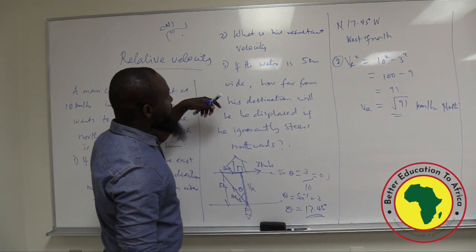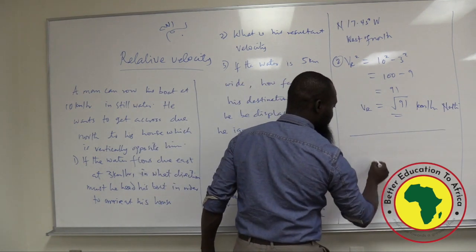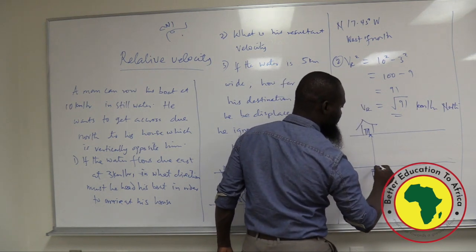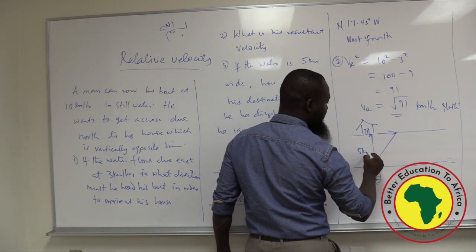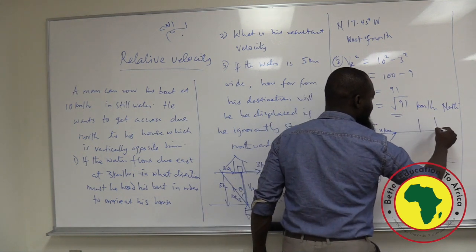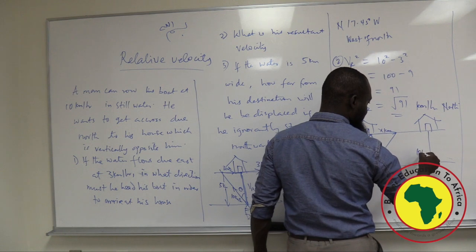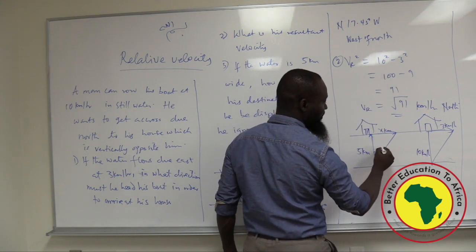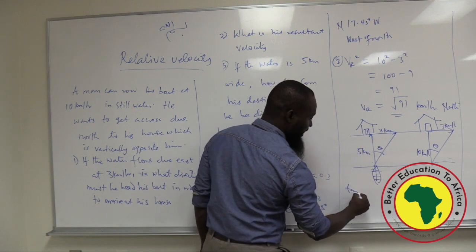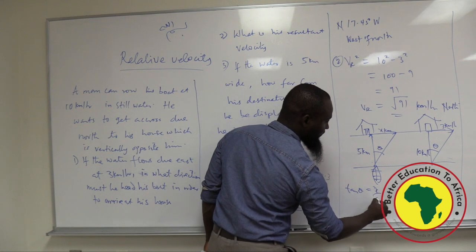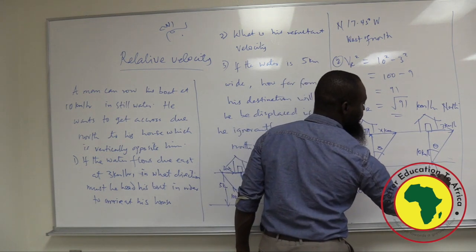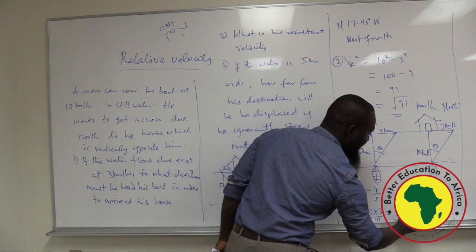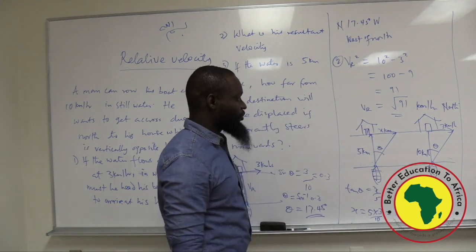The last question: if he ignorantly goes straight northwards, the waves of the water will displace him. The water is 5 kilometers wide, so he will be displaced a distance x kilometers. Using similar triangles — tan theta equals x over 5 and also equals 3 over 10 — comparing these two triangles for the same problem gives x equals 5 times 3 over 10, which is 1.5 kilometers. He will be displaced 1.5 kilometers from where he's supposed to arrive.